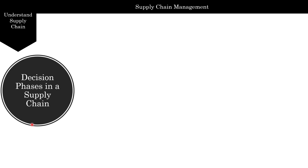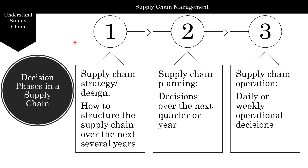The different decision phases in a supply chain are broken into three stages. Stage one is supply chain strategy and design, which talks about how a company structures their supply chain over the next several years — a long-term view. Stage two is supply chain planning, covering decisions over the next quarter or year. And finally, stage three is supply chain operations, involving daily or weekly operational decisions. So we move from long term, to medium term, to short term.